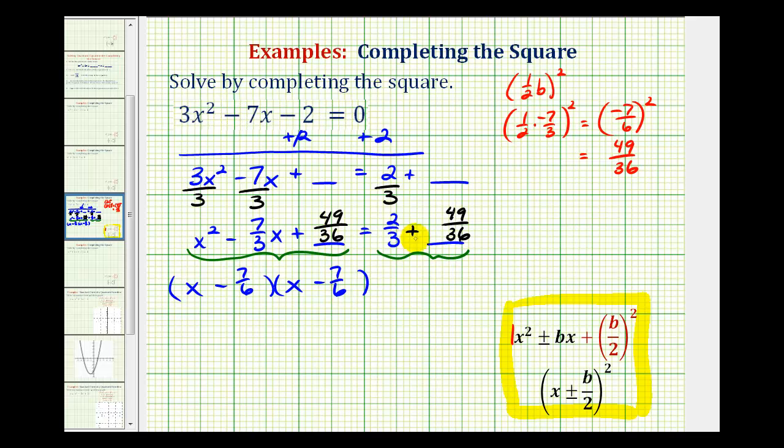Now on the right, in order to add these fractions, we do have to have a common denominator, which would be 36, so I'll multiply this fraction by 12/12.